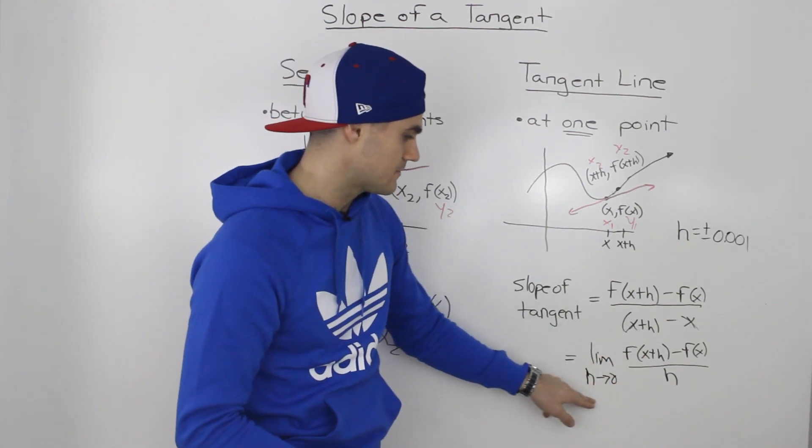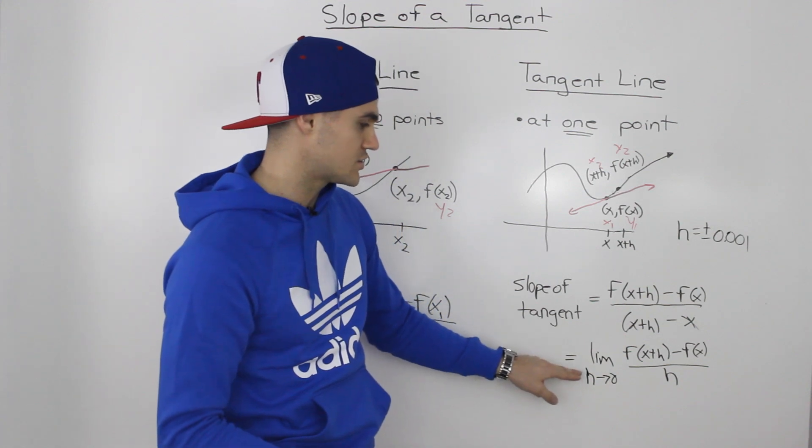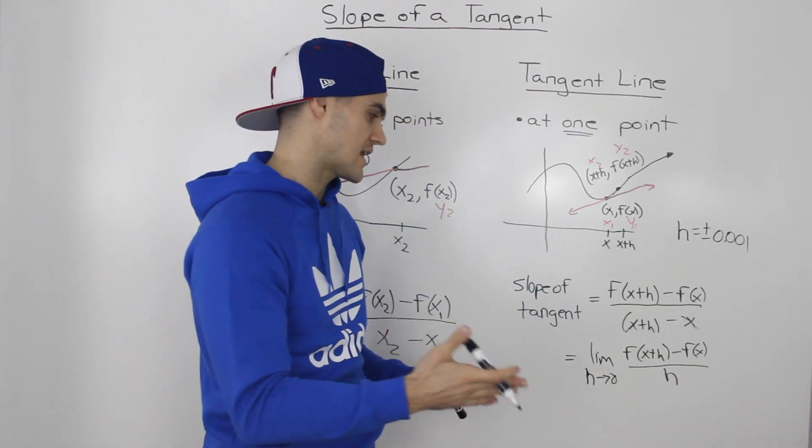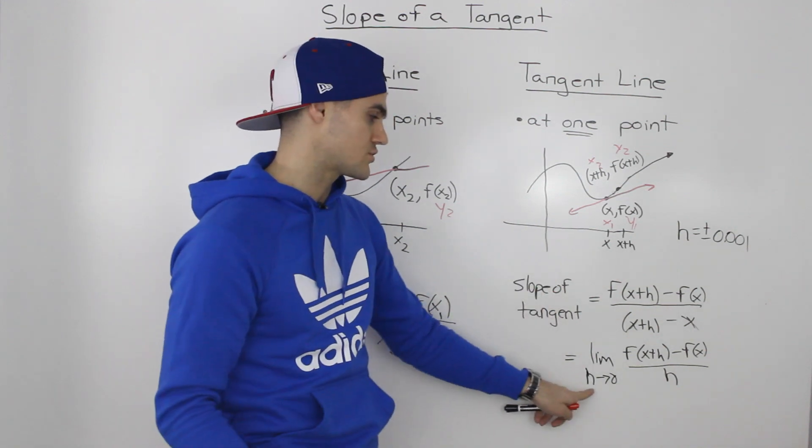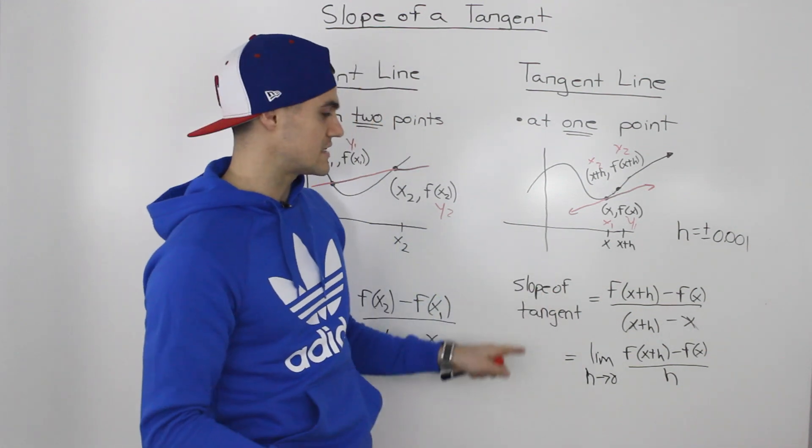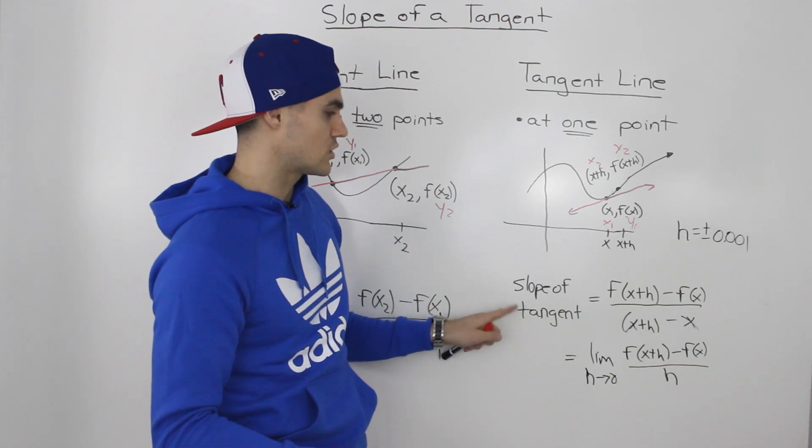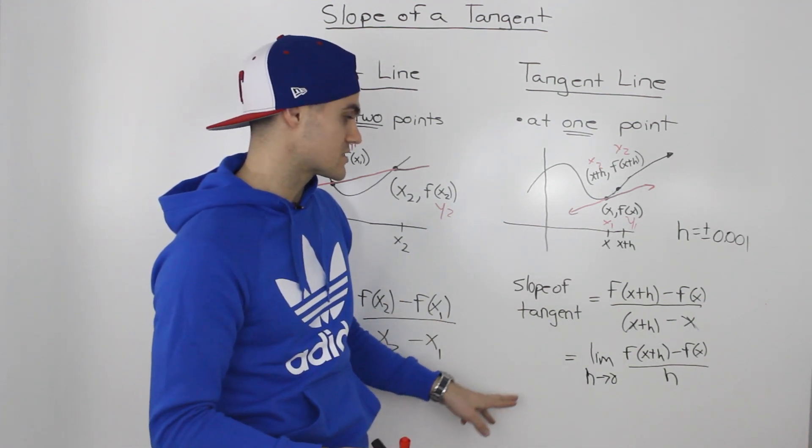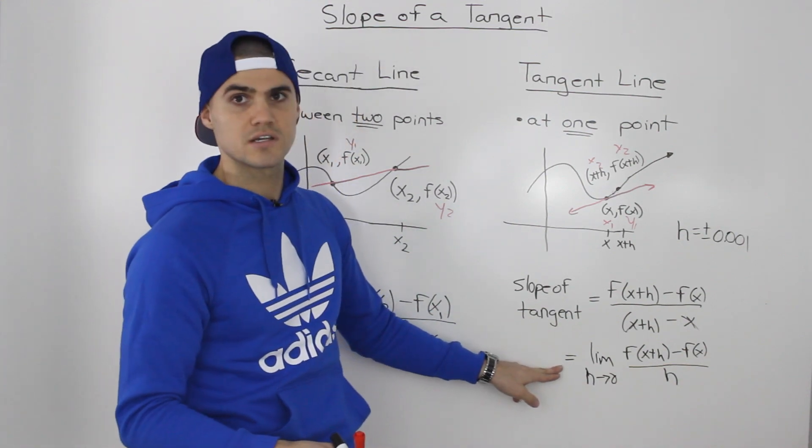But when you see this notation here, it just means that we're taking this expression and we're finding the value of it as h gets closer and closer to zero. And that's going to give us the exact value for the slope of the tangent. Now I'll go over a couple of examples in the next few videos of how we actually use this formula.